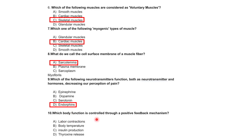Which body function is controlled through a positive feedback mechanism? Options: uterine contractions, body temperature, insulin production, or thyroxine release.